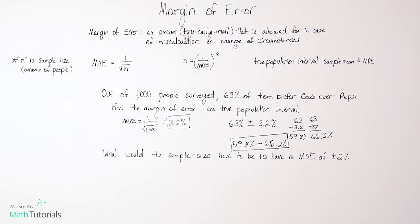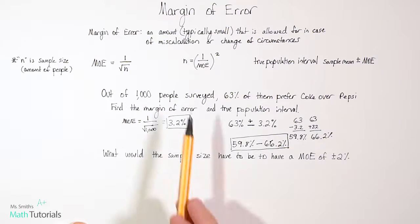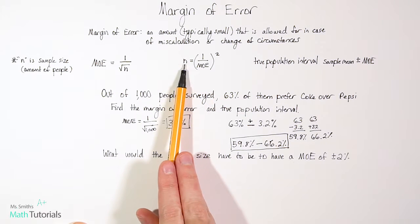The second question says, what would the sample size have to be to have a margin of error of plus or minus 2%? So how big would that sample size have to be? And traditionally, the larger the sample size, the more people that you survey, the smaller your margin of error gets. If our margin of error is plus or minus 2%, it's definitely going to be more than 1,000 people. That's for sure.